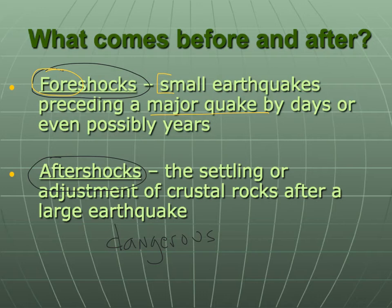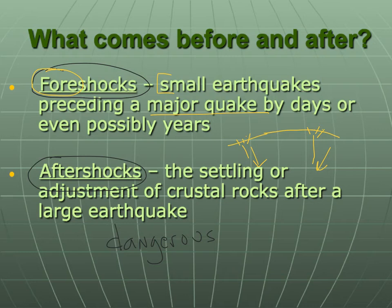Foreshocks are basically like taking a small stick in two hands and bending it. If you bend it slowly, you'd start to hear cracks — the wood would begin to splinter, and then ultimately it would give way and break. Those foreshocks are like those initial cracks, that initial splintering — it's the buildup of strain and it's about to give way.